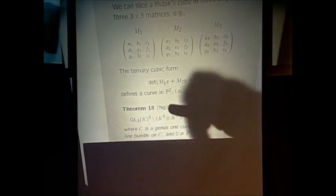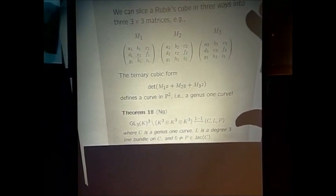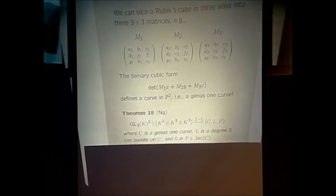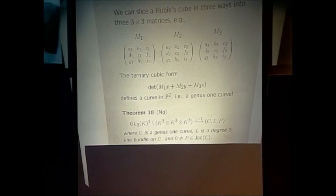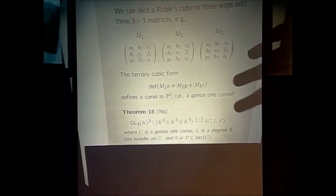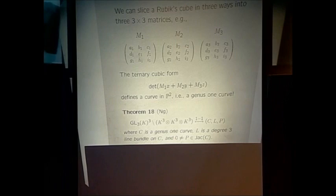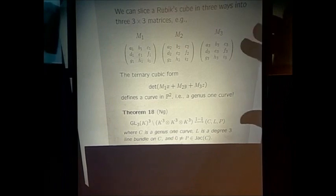This is essentially contained in a PhD thesis of Kaka and Ng, proved over the complex numbers, but you can do it over any field. The result is: K³ ⊗ K³ ⊗ K³ — the space of Rubik's cubes — modulo GL3 cubed, those orbits parametrize a genus one curve, a degree three line bundle, and a non-zero point on the Jacobian.